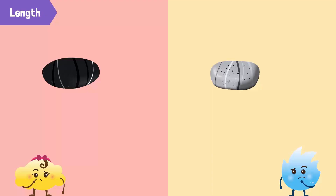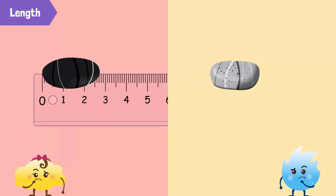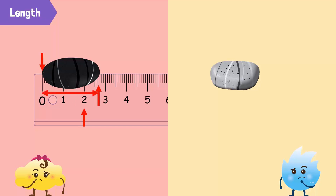A pebble can be a few centimeters long, so we can use a meter rule to measure its length. We place the meter rule next to the pebble and make sure one end of the pebble is at the zero of the meter rule. The meter rule scale consists of centimeters and millimeters. When we measure with the meter rule, we first count the number of centimeters and then add the millimeters.